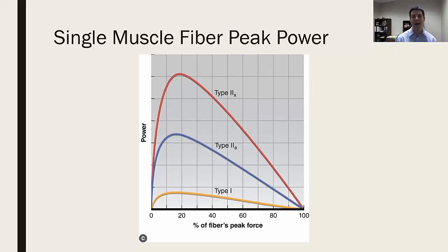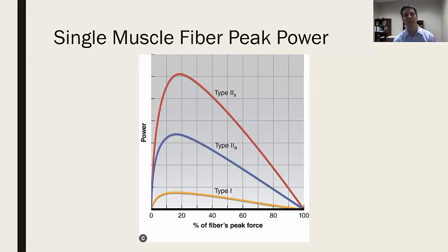The next fiber type is a hybrid intermediate — the type 2A fiber. Type 2A fibers have a relatively high rate of power development, a relatively high Vmax, and a relatively high specific tension. These muscles are going to be somewhat red — closer on the red scale — and we can define them as fast oxidative muscle fibers. They have fast and powerful movements, but they are also fatigue resistant, so they can sustain that for a little bit longer.